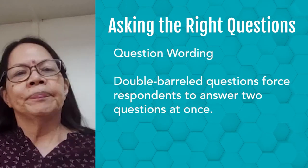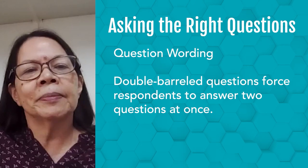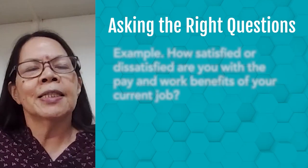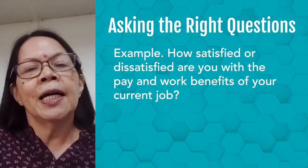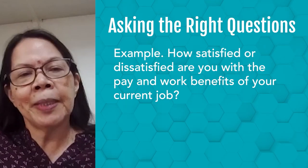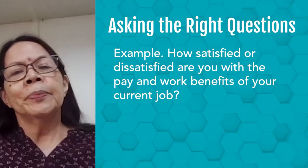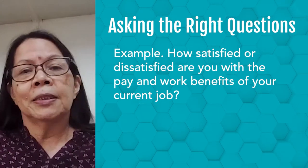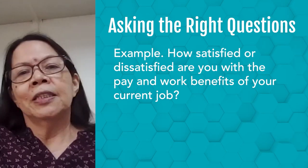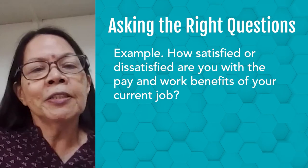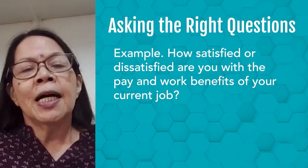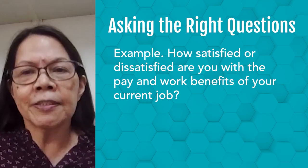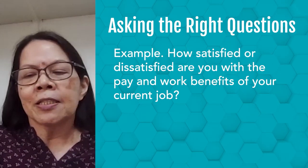Another example of wording that leads to biased answers is the double-barreled question. Double-barreled questions force respondents to answer two questions at once. An example is: 'How satisfied or dissatisfied are you with the pay and work benefits of your current job?' A person may be satisfied with the pay but dissatisfied with the work benefits, but is forced to give one answer for both. The better way is to ask two separate questions: 'How satisfied or dissatisfied are you with the pay of your current job?' and then 'How satisfied or dissatisfied are you with the work benefits of your current job?'